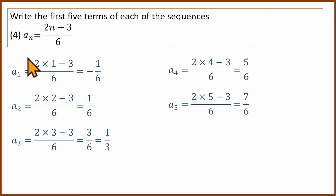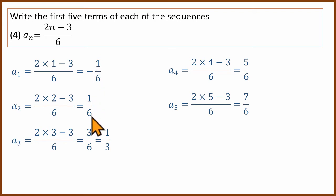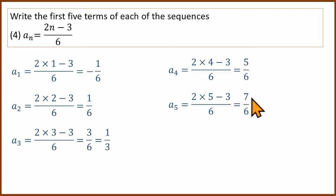The fourth question is aₙ = (2n − 3) divided by 6. Substituting: a₁ = −1/6, a₂ = 1/6, a₃ = 1/3, a₄ = 5/6, a₅ = 7/6.